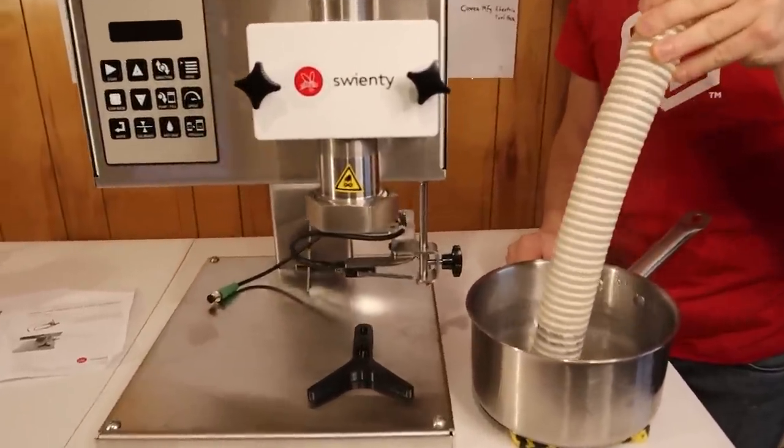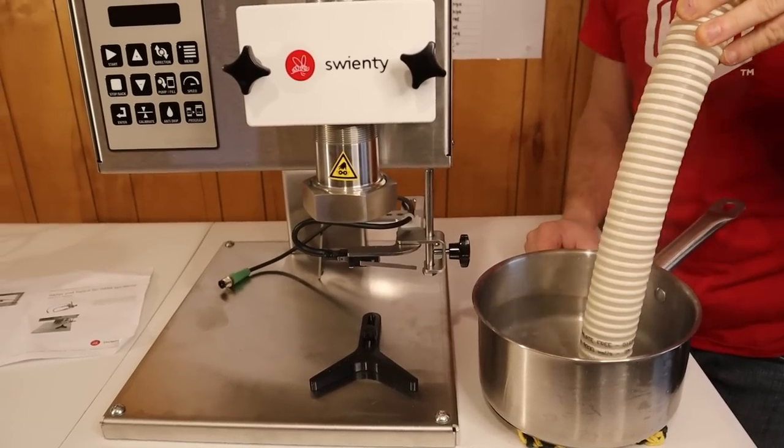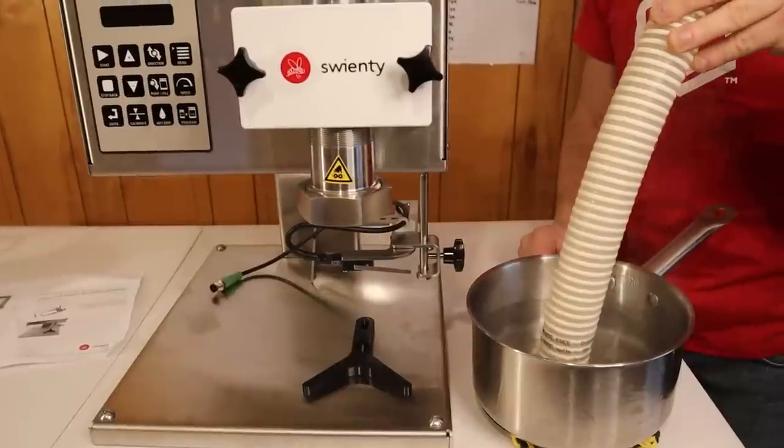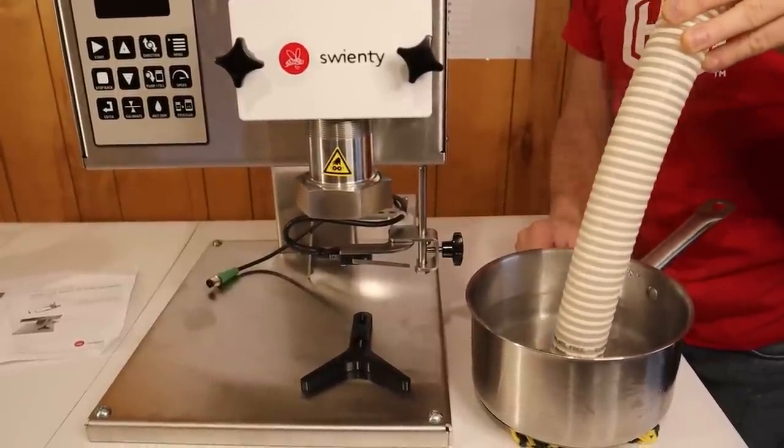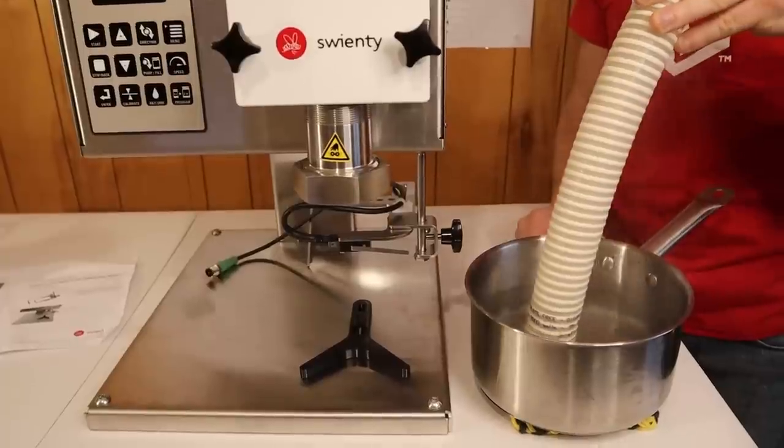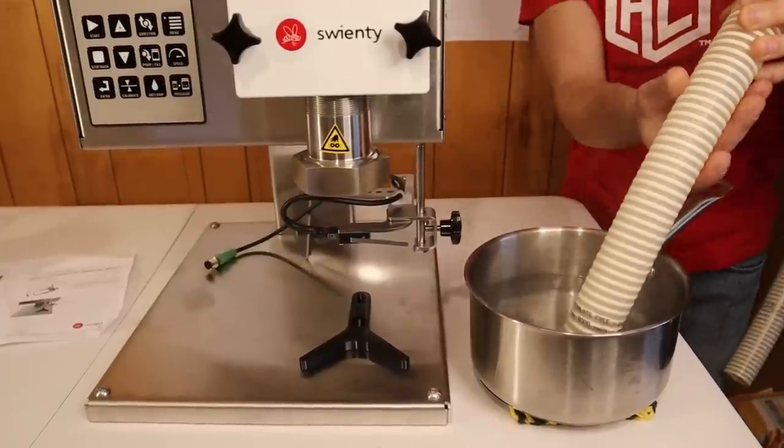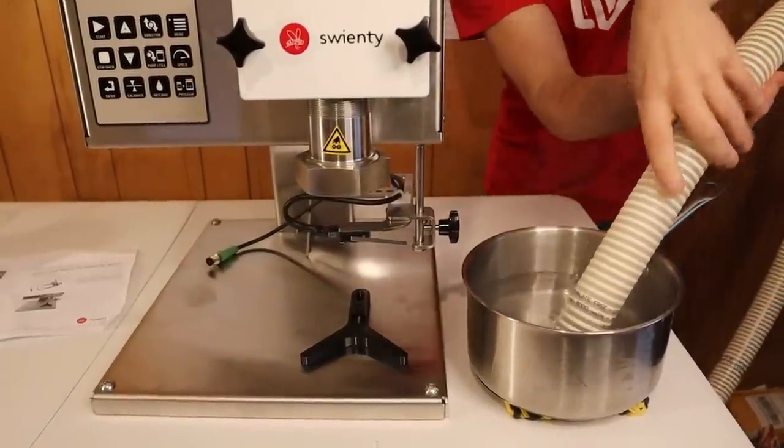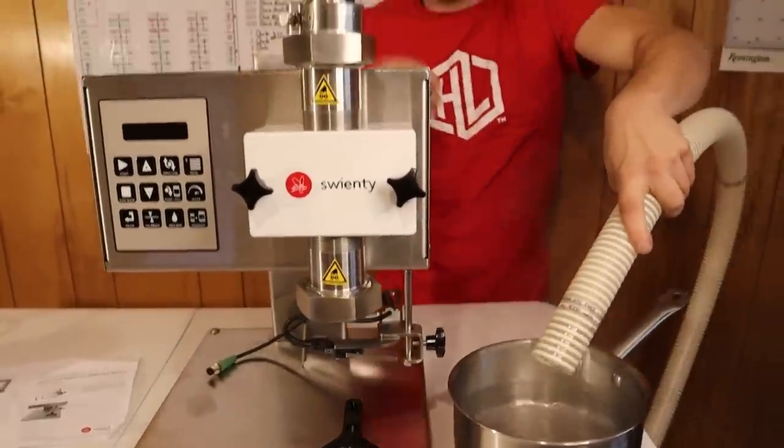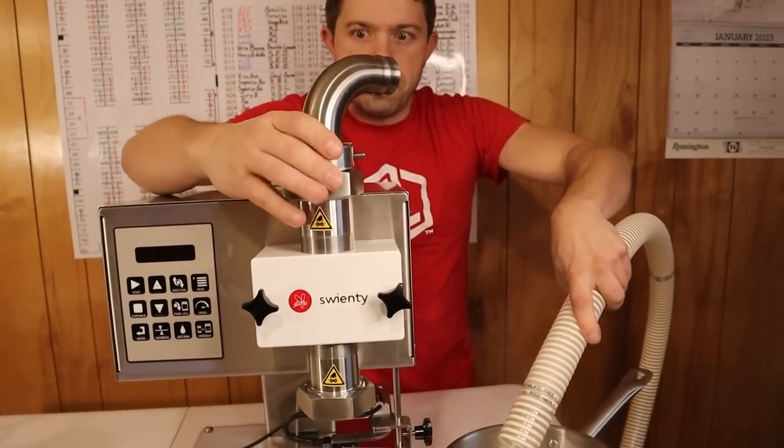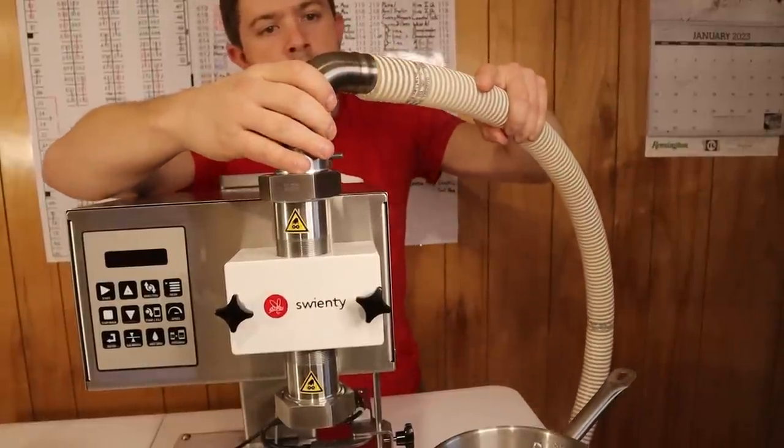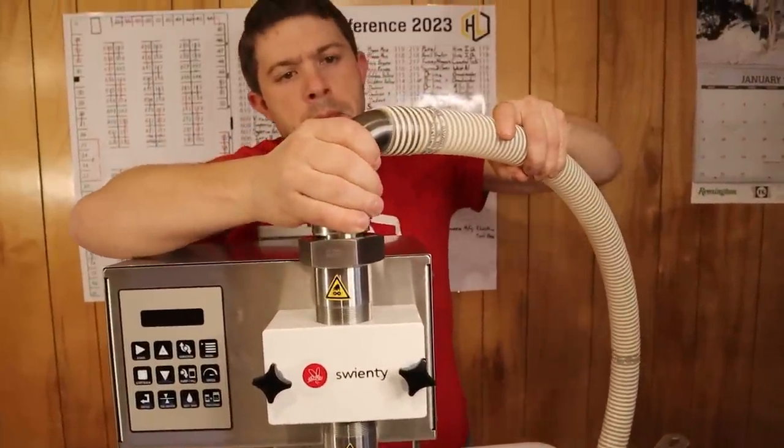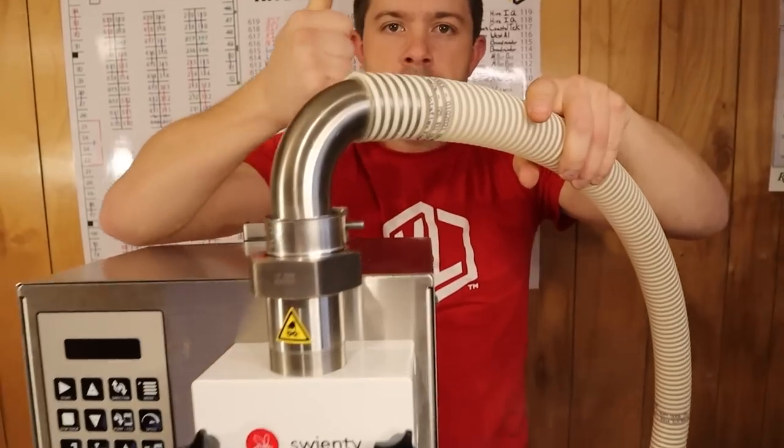This water was boiling just a few minutes ago, and we are heating up the end of this hose that is supplied with the Swinty unit. Heating it up like this will make it 10 times easier to get it onto that stainless steel elbow. We didn't have it in the water very long at all. And look how easy it is to throw this on here.